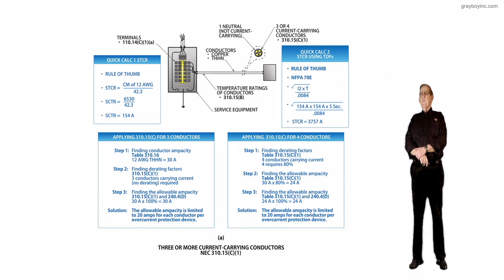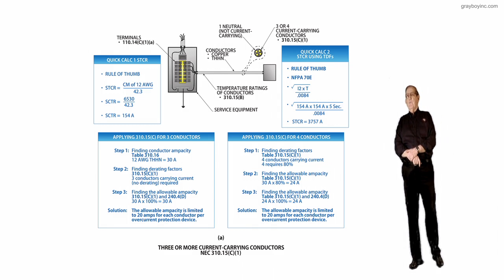Now 3,757 amps, you'd say, how could you have that much current without damaged insulation? Because you clear it in a half cycle, 0.0084 seconds. Over here, it takes 5 seconds to clear it, so you can only put 154 amps on it.